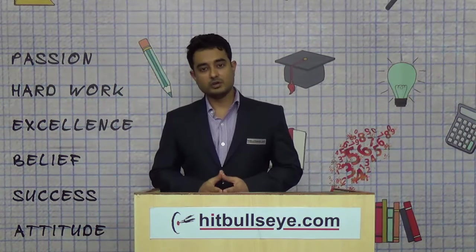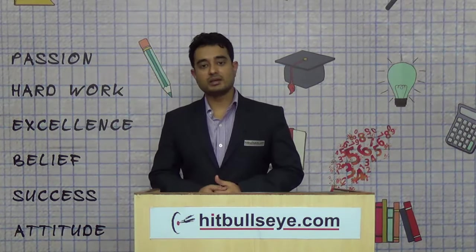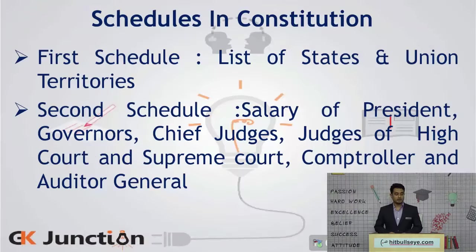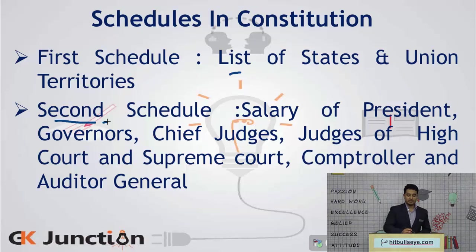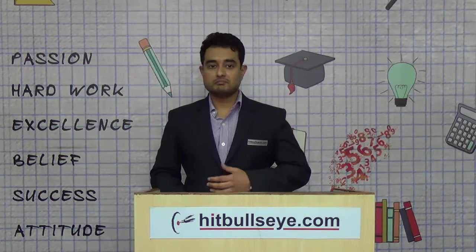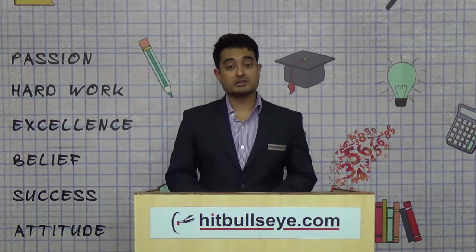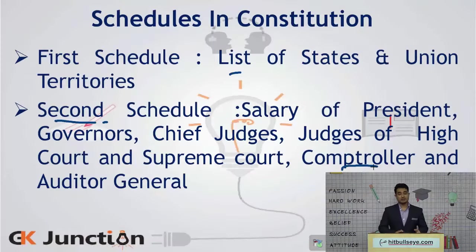Initially there were eight schedules when the constitution came into force but with subsequent amendments the current number is 12. The first schedule provides the list of names of different states, their extent as well as union territories and their extent and their boundaries. The second schedule provides the emoluments, allowances and privileges of the President of India, the Governors, the Speakers, the judges of the Supreme Court, High Court, the CAG and so on.